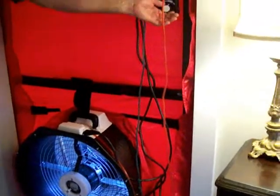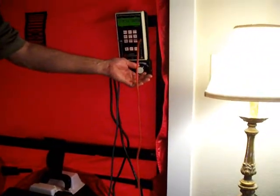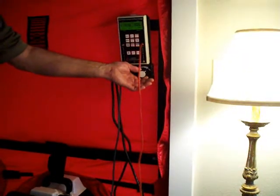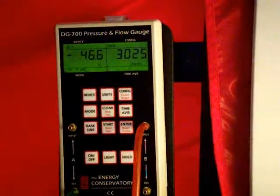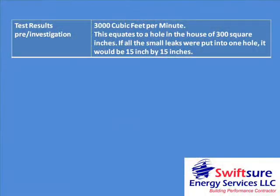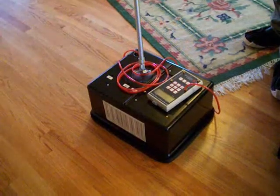Many typical homes have enough air leaks that it amounts to a good sized window being left open year round. In this case we have pressurized the home up to 50 pascals of air volume and measured air flow exiting gaps at 3,000 cubic feet per minute. This is the same as having a hole in the house of 15 inches by 15 inches — muddy and hot air just flowing outside every day.